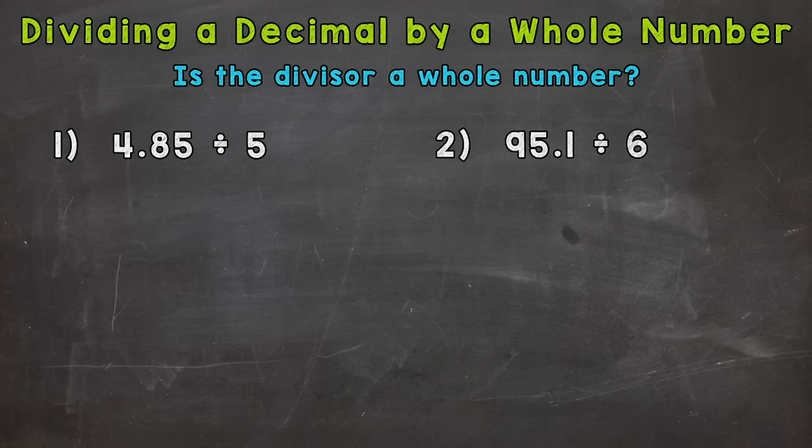So we have two examples here that we're going to go through together. Let's jump into number one, where we have 4 and 85 hundredths divided by 5. And the first thing we need to do is set this problem up. So 4 and 85 hundredths here, this is our dividend. It's the number that's being divided or split up. That goes underneath the division bar.